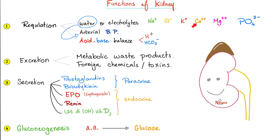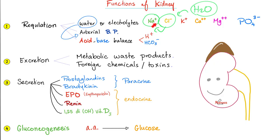Regulation of water and electrolytes in your body, and of your arterial blood pressure. Because if the kidney reabsorbs salt — and chloride follows sodium, and water follows sodium chloride — when I reabsorb more salt and water, I will raise my blood pressure. If I reabsorb less sodium chloride, I will lower my blood pressure. This is not the only mechanism; it's just one of them.